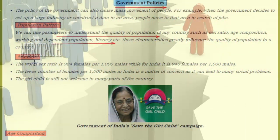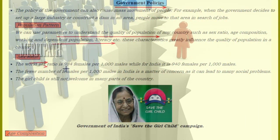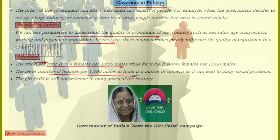Sex Ratio: The world sex ratio is 984 females per 1000 males, whereas in India, for every 1000 males, there are 940 females. The fewer number of females per 1000 males in India is a matter of concern due to many social problems.